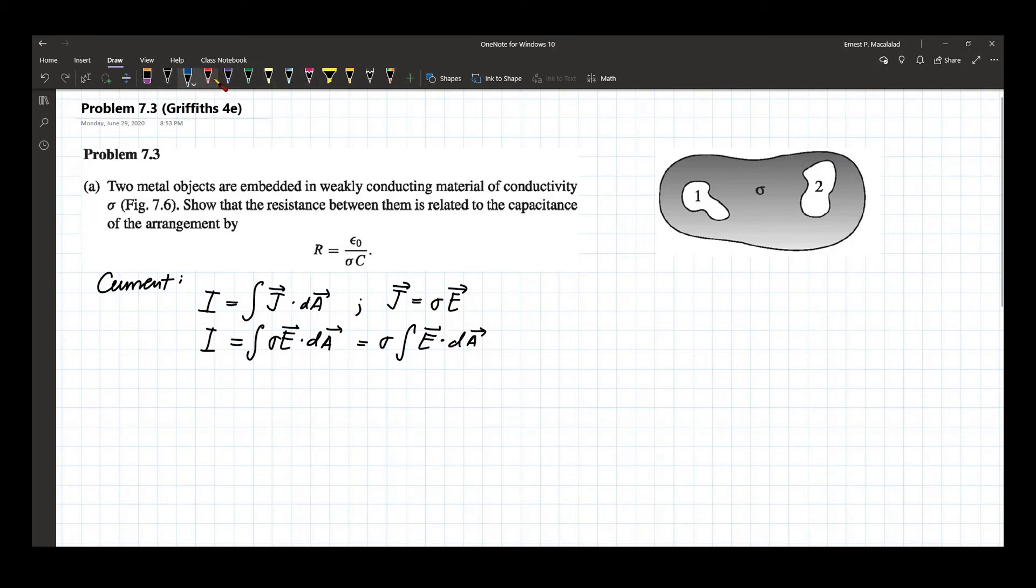So if we're going to enclose one of the metal objects by a Gaussian surface, it doesn't matter right now what is the shape of this.